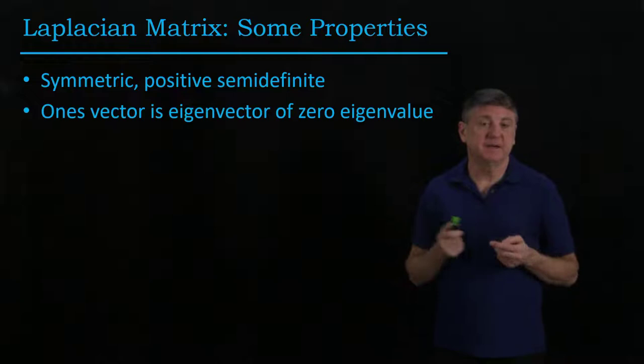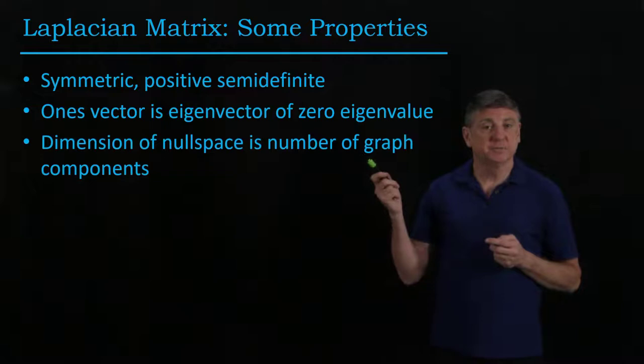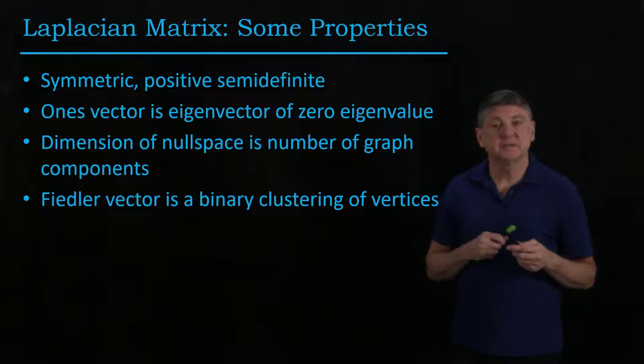The ones vector is definitely an eigenvector associated with one of the zero eigenvalues. The dimension of the null space is the number of graph components. The Fiedler vector is one way to give us a binary clustering of the vertices.